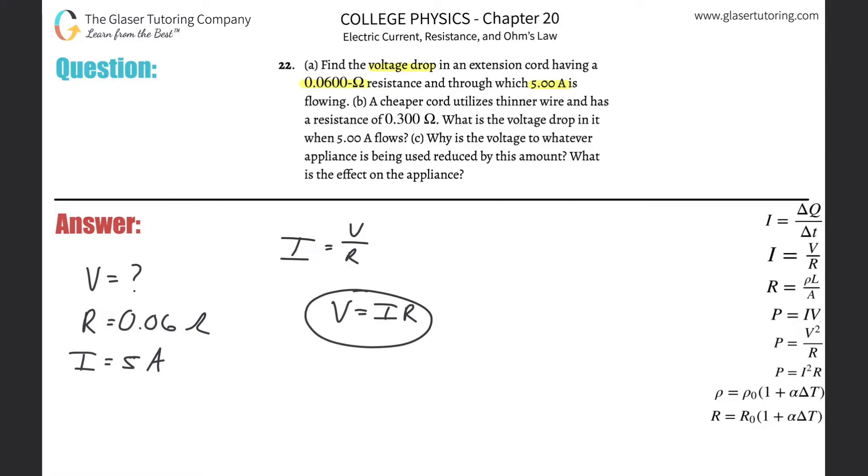I'm going to use this one. Why? Because it's already solved for V and that's what I need to find. So, just plug it in. 5 times the resistance, 0.06.